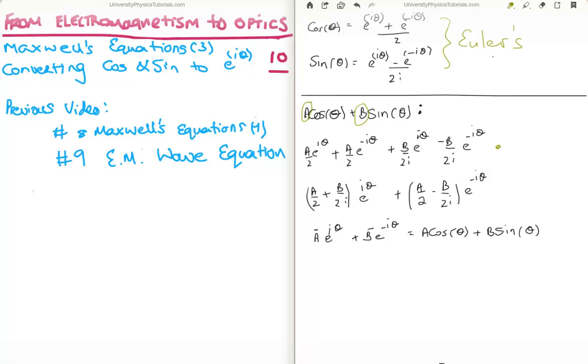Something similar, of course, happens at B. But, the next thing I'm going to do is I'm going to group the constants together, or the multiplicative constants, for E to the i theta. And I'm going to do the same thing for E to the minus i theta. So, you have A over 2 minus B over 2i.